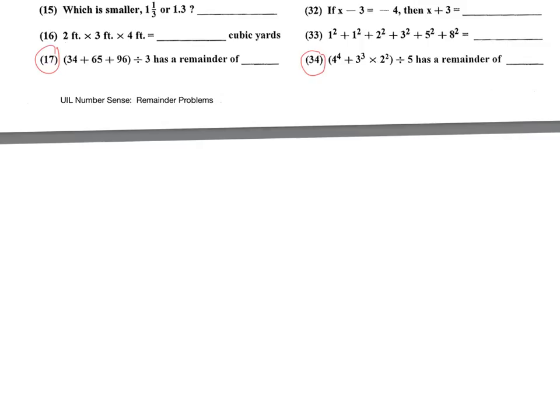Well, instead of adding those and dividing by 3, what we're going to do is divide each by 3 and find the remainder of each and then add the remainders. 34 divided by 3 has a remainder of 1. 65 divided by 3 has a remainder of 2. And 96 is a multiple of 3. So if we add 1 plus 2 plus 0, that's 3 divided by 3. The remainder is 0.